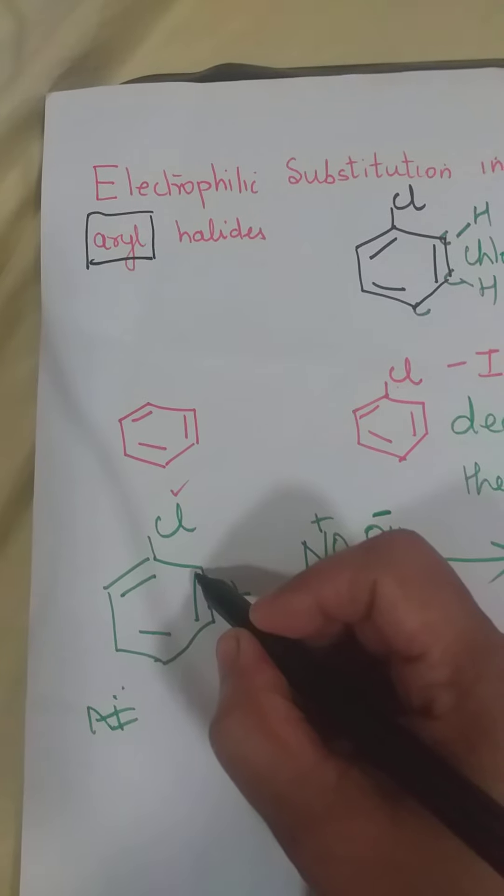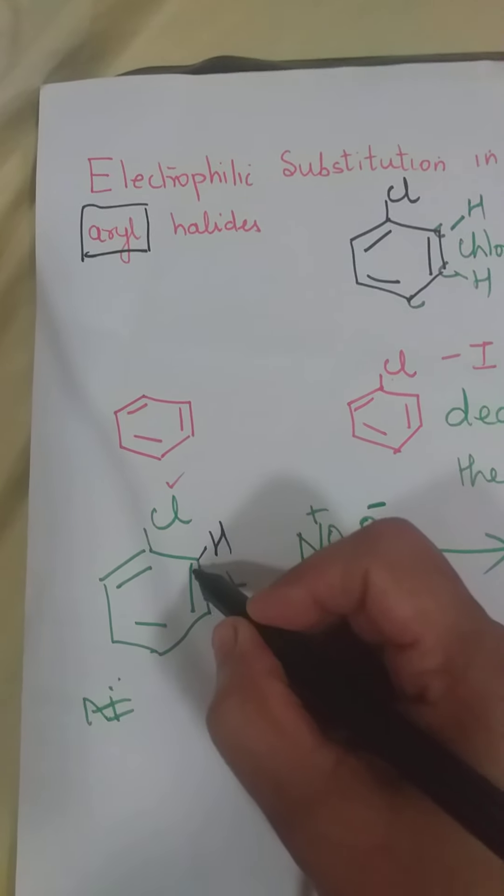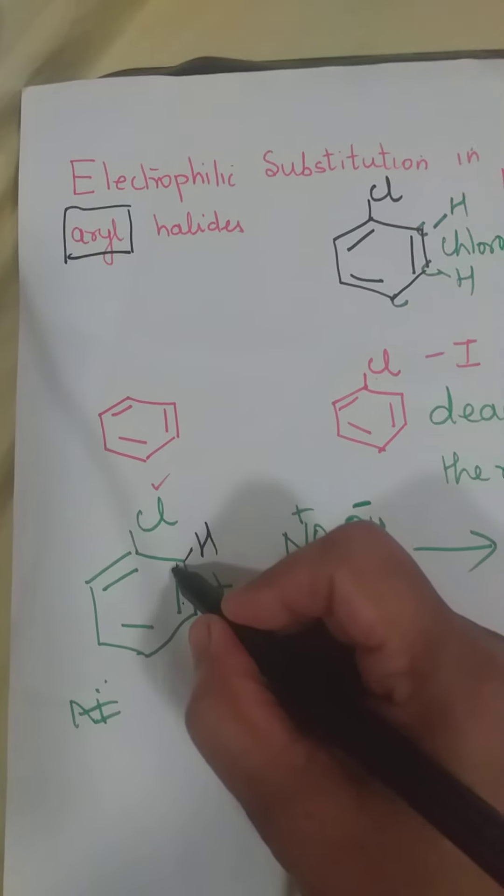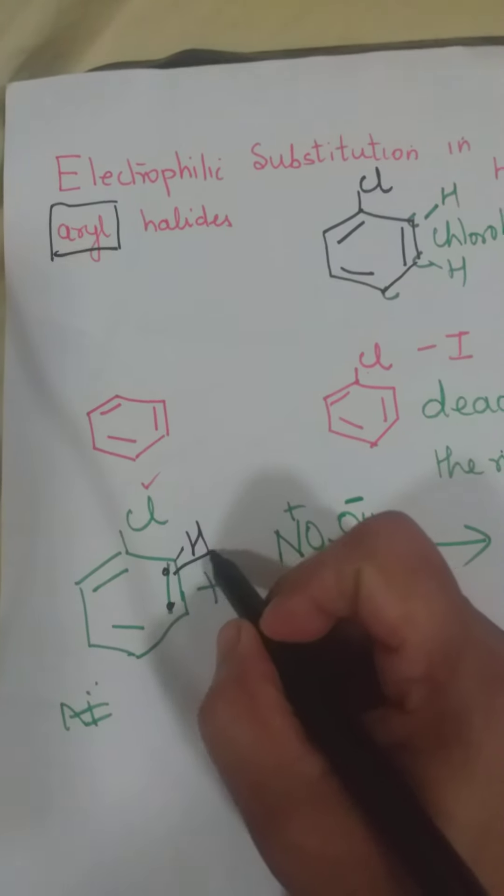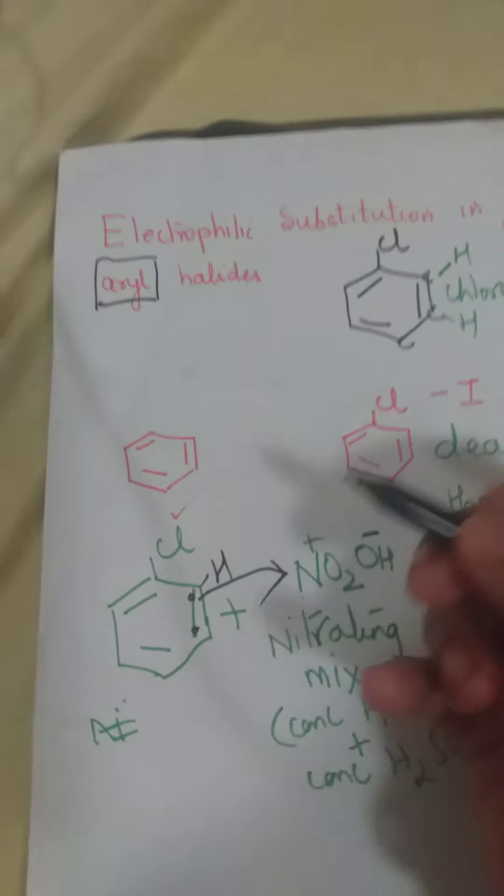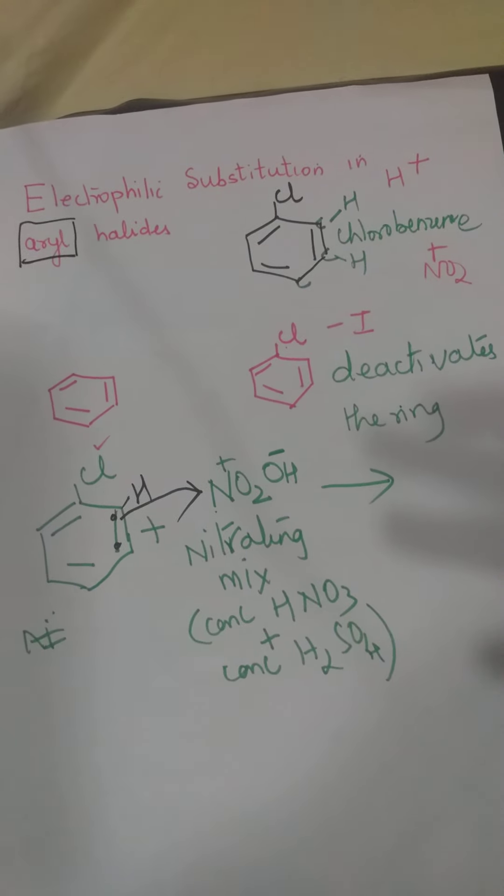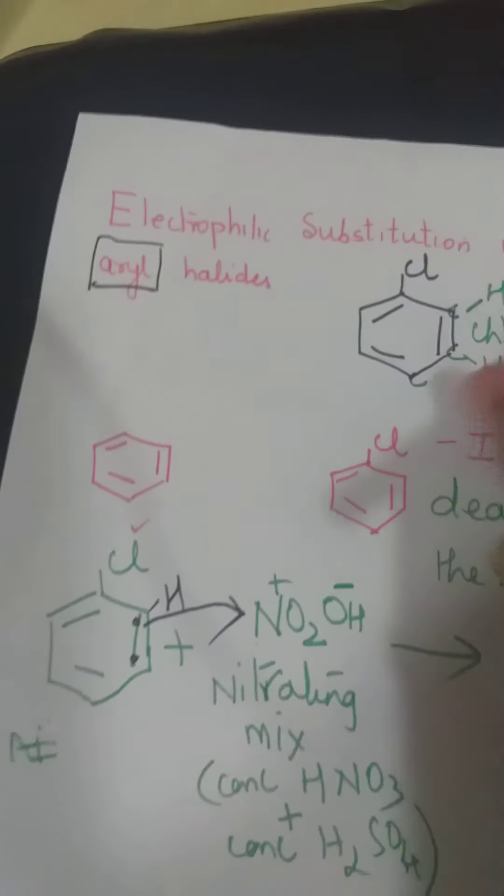Reaction kaise hota hai, pata hai, yeh jo electron pair hai, na, yahan pe, yahan ek hydrogen already hai, yeh aapko pata hai, yeh jo electron pair hai. Aapko pata hai na, pi electron mein kya hota hai? Electron pair hota hai, aur woh electron pair, woh nitrogen ko deta hai, because nitrogen has got a positive charge. Toh woh electron pair kis ko jata hai? N plus ko jata hai, aur uske wajah se, this is how it will look now.